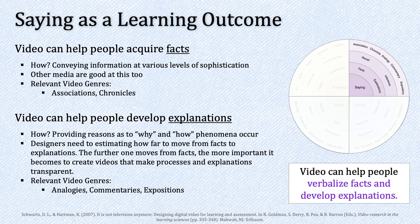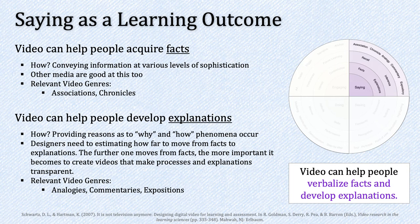Video can also help people develop explanations by providing reasons as to why and how different phenomena occur. One thing to keep in mind is that designers need to estimate how far to move away from facts toward explanations — the further one moves from facts, the more important it becomes to create videos that make processes and explanations transparent. Relevant video genres for developing explanations involve analogies, commentaries, and expositions. A fun example of developing explanations through commentary is cynical movie trailers where people explain all of the things wrong with a given film.